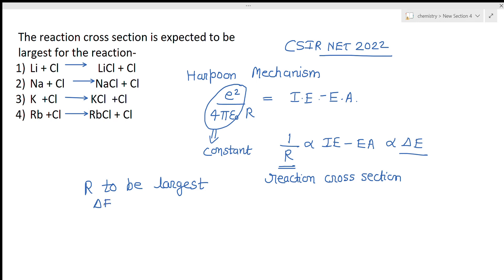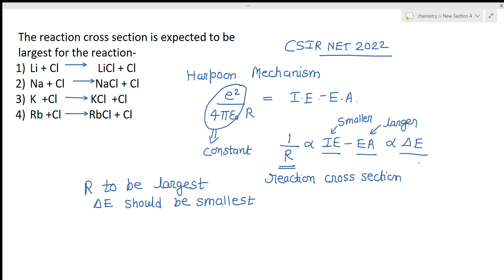So for r to be largest, ΔE must be smallest. Since ΔE depends on ionization energy and electron affinity, ΔE is smallest when ionization energy is small and electron affinity is large. Among the four options, we need to find the one where ionization energy is smallest and electron affinity is largest.